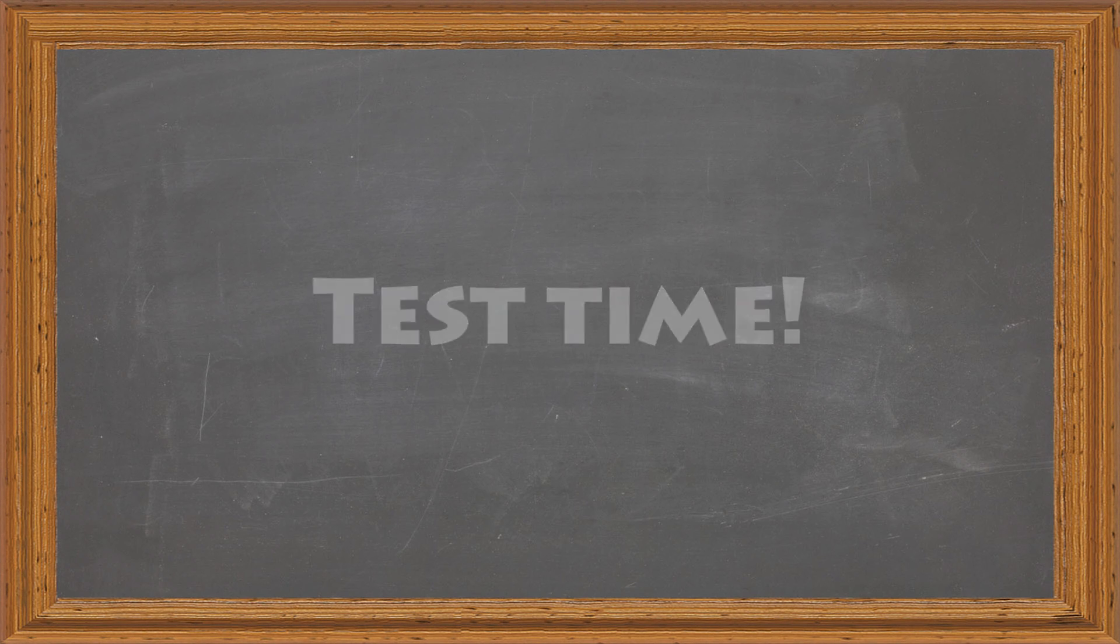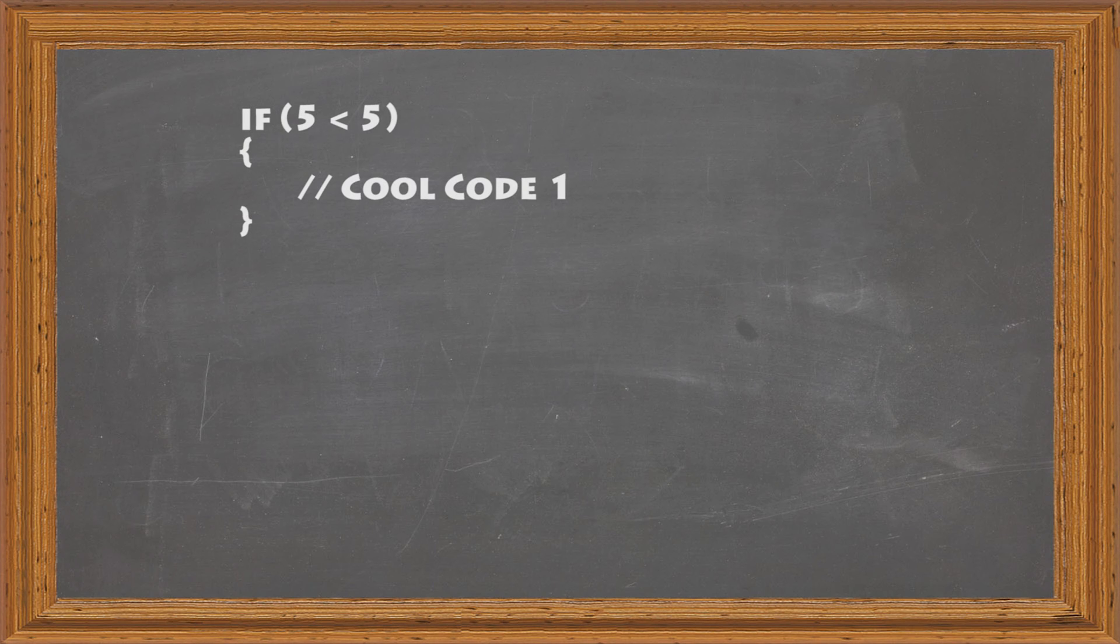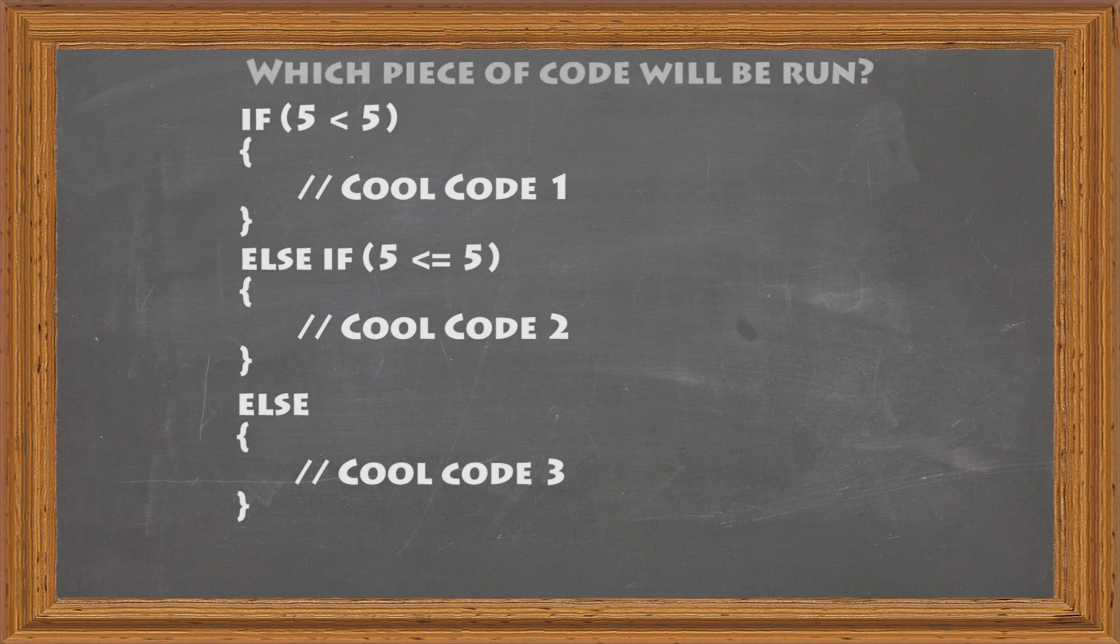So imagine we have an if statement with 'five is less than five,' and then an else if with 'five is less than or equal to five,' and then an else. Now what will be run?